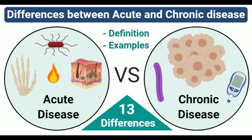Causes: Infections by foreign agents cause most acute conditions, and some diseases might even appear due to accidents and misuse of medication. Causes of chronic diseases are not always certain, but an unhealthy lifestyle and diet often cause these diseases. Nature: Most acute diseases are communicable and caused by an infectious agent, while most chronic diseases are non-communicable as no infectious agent is associated.